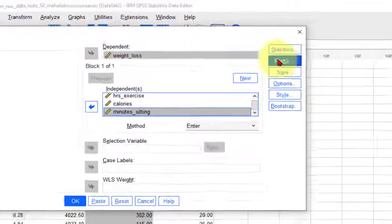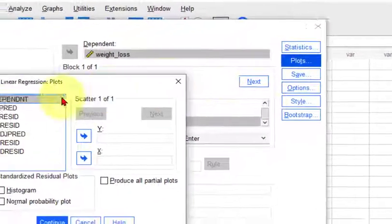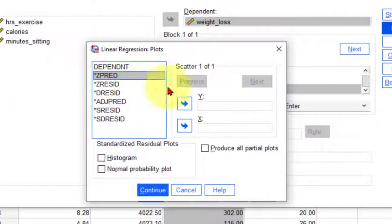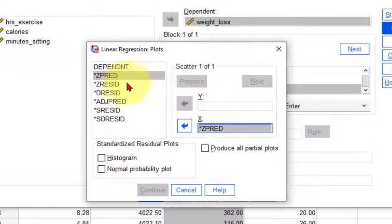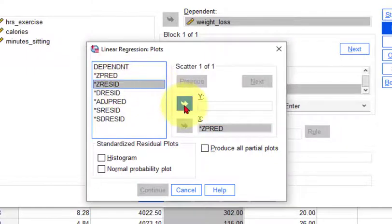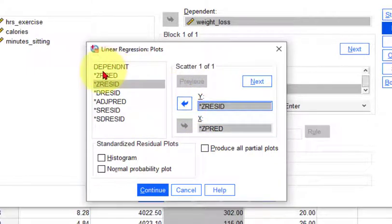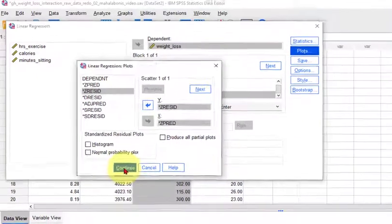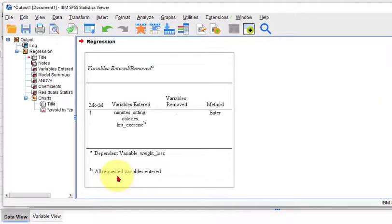We're going to go to plots. The z-predicted is the x-axis. The z-residuals are the y-axis. Since these things are all z-scores, the best fit line is going to be where x equals zero, so it's like the x-axis. That's because it's been standardized. Let me show you how to do this. Click OK.